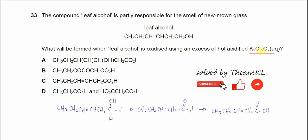Many candidates mistakenly think that hot acidified potassium dichromate can oxidize the C=C double bond.